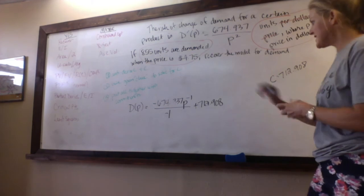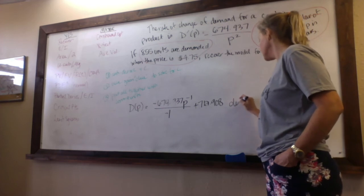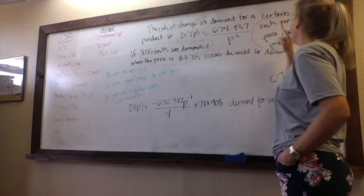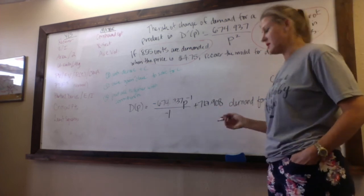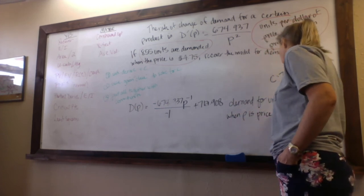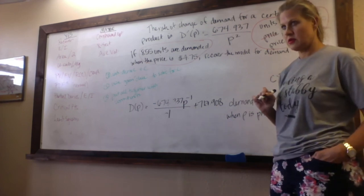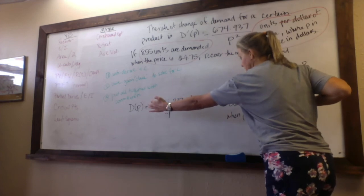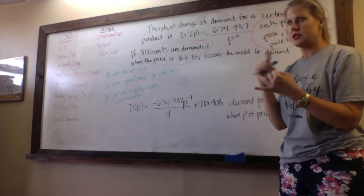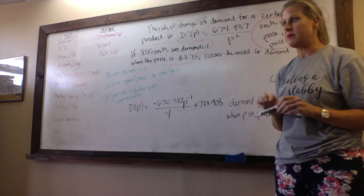So this gives demand for the product or demand in number of units when P is or represents the price in dollars. This right here is your final answer, that is the recovered model, fully recovered model. Correct name, got my numbers, have my units. I dropped the language that talks about something being a rate of change.